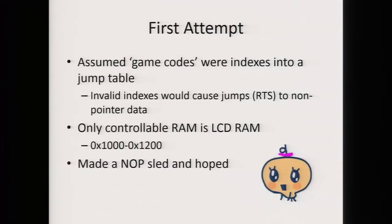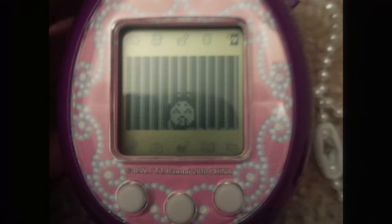Knowing this, I thought it was worth trying to exploit this. I imagined how it might work internally — maybe game codes index into a jump table. There's only a small amount of RAM I can control from a figure, which is the stuff displayed on screen — about 200 bytes of RAM — so I thought I'd just make a no-op sled and hope. I tried all 250 codes hoping I'd jump to the shellcode, but I did not.